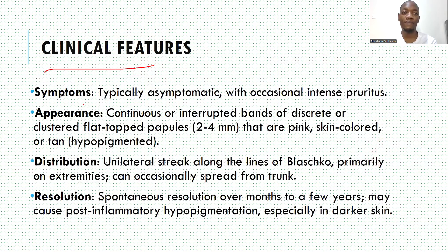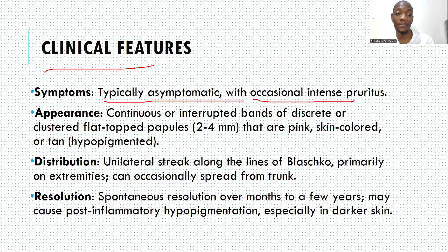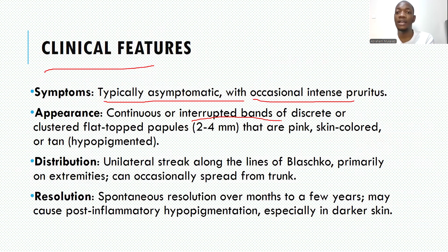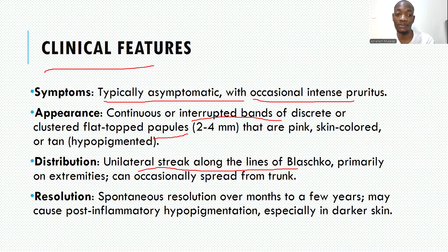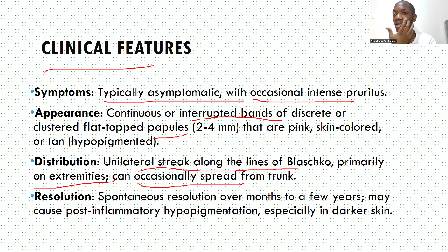In the clinical picture, someone will typically present with an asymptomatic, or sometimes pruritic, eruption that follows Blaschko's lines of development. It will spread along that line with either clustered flat-topped lichenoid papules, some coalescing to form plaques. They can be skin-colored, hyperpigmented, or even hypopigmented. The distribution follows Blaschko's lines, primarily seen on the extremities — upper and lower — but occasionally also on the trunk, neck, and face.